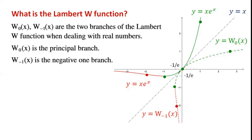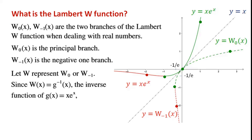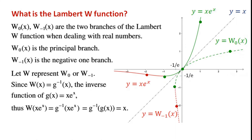W₀(x) and W₋₁(x) are the two branches of the Lambert W function when dealing with real numbers. W₀(x) is the principal branch, and W₋₁(x) is the negative-1 branch. Since W(x) is the inverse of g(x) equals x·e^x, applying W to both sides gives: W(x·e^x) equals x.